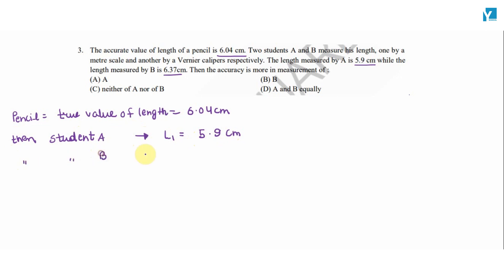Student B measures L2 equals 6.37 cm. So which reading is more accurate? This reading or this reading?